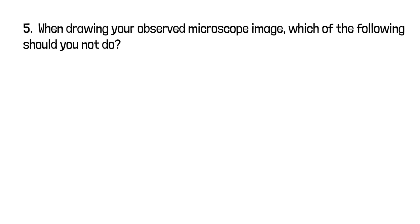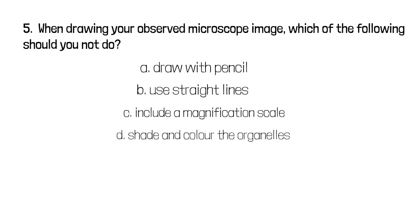Question five. When drawing your observed microscope image, which of the following should you not do? a) Draw with a pencil, b) use straight lines, c) include a magnification scale, or d) shade and color the organelles. It's d. You shouldn't shade and color the organelles.